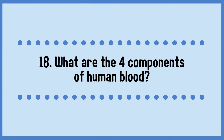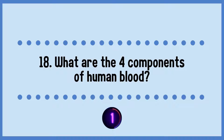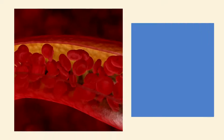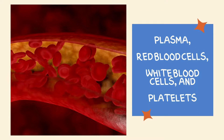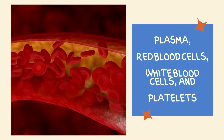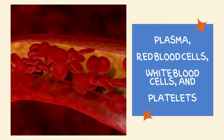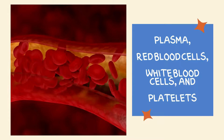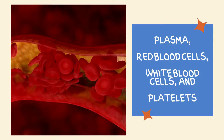What are the four components of human blood? The answer is plasma, red blood cells, white blood cells, and platelets.